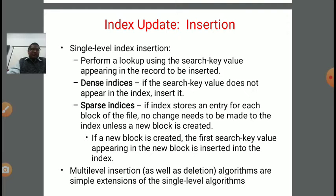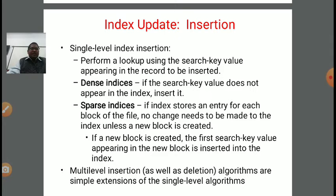For single-level index insertion, we have to perform a lookup — we need to search using the search key value appearing in the record to be inserted. There are two cases: for dense indexes, if the search key value does not appear in the index, we insert it. For sparse indexes, if the index stores an entry for each block of the file, no change needs to be made to the index unless a new block is created. If a new block is created, the first search key value appearing in the new block is inserted into the index file.